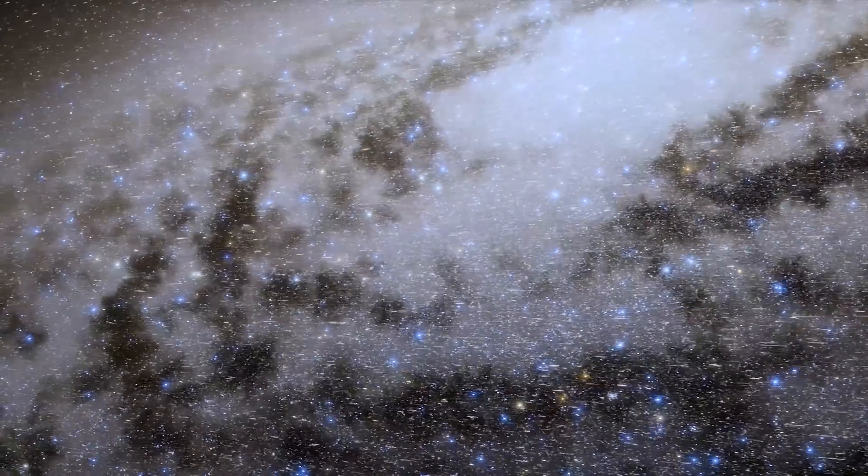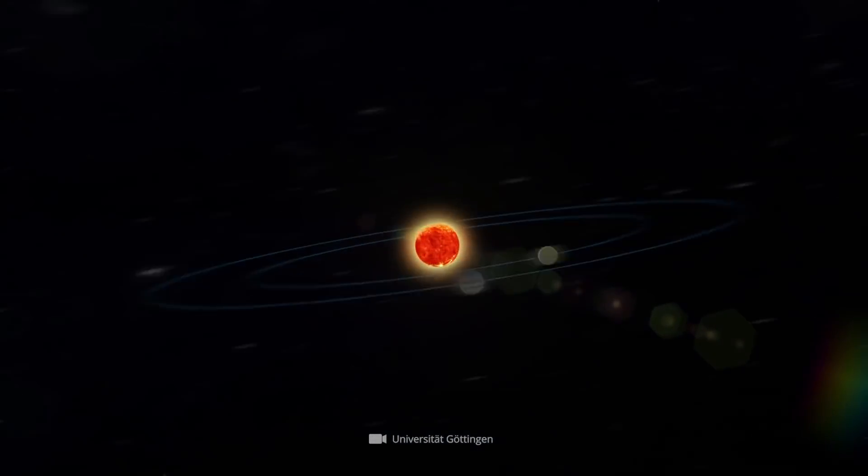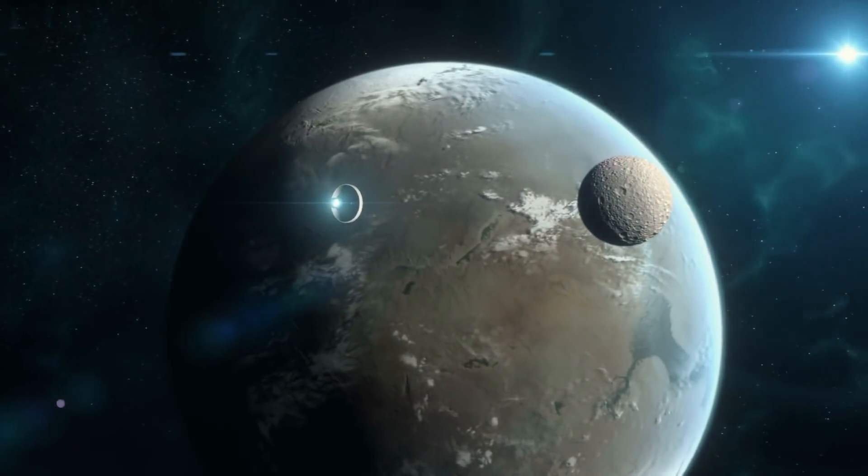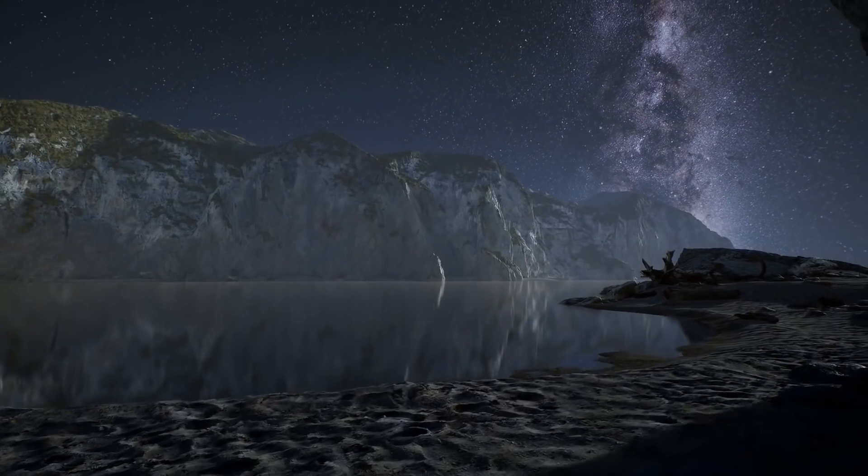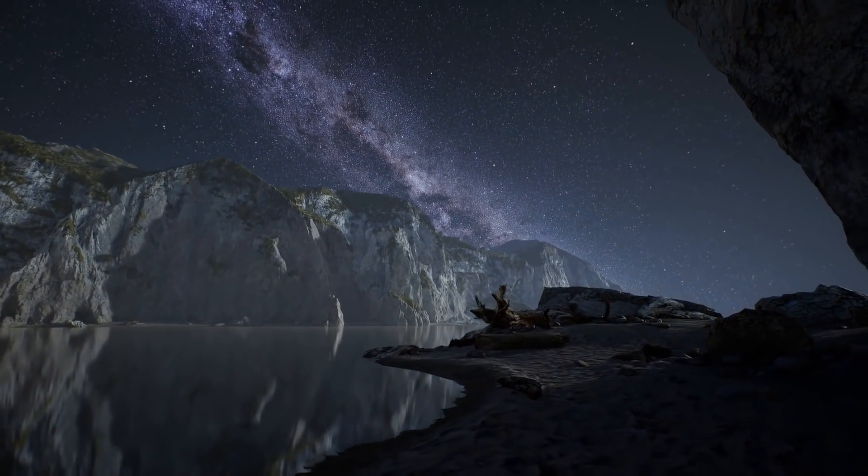Others, however, are skeptical. Teegarden b, at a distance of only 12.5 light-years, would again be a candidate that could be reached by radio signals and perhaps by a probe at some future point in time. So far, all statements regarding the exoplanets are based on preliminary calculations and observations.